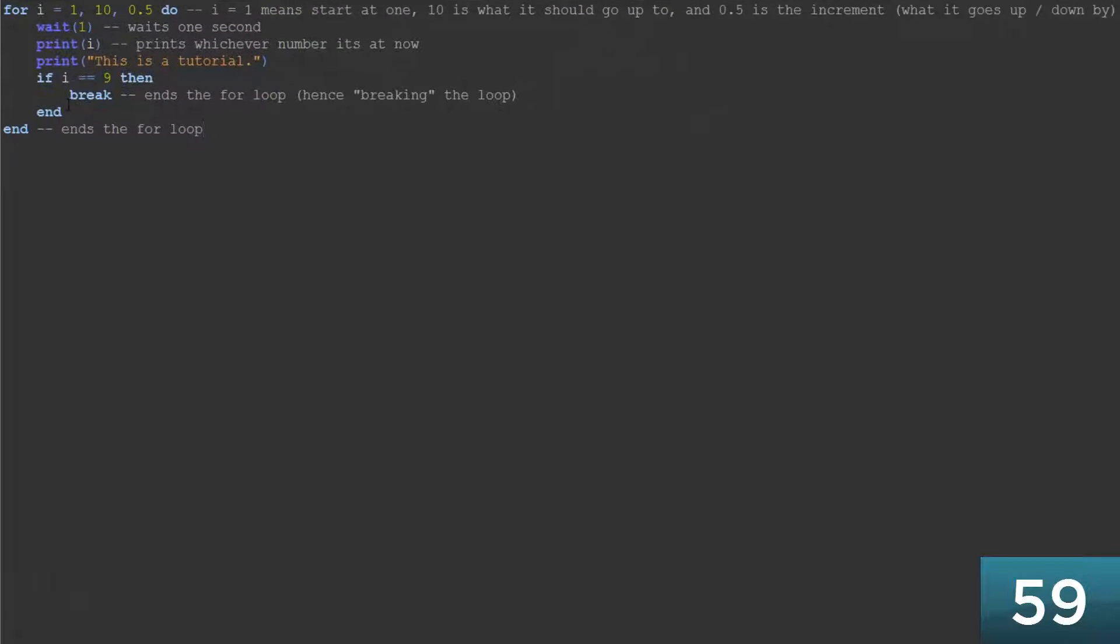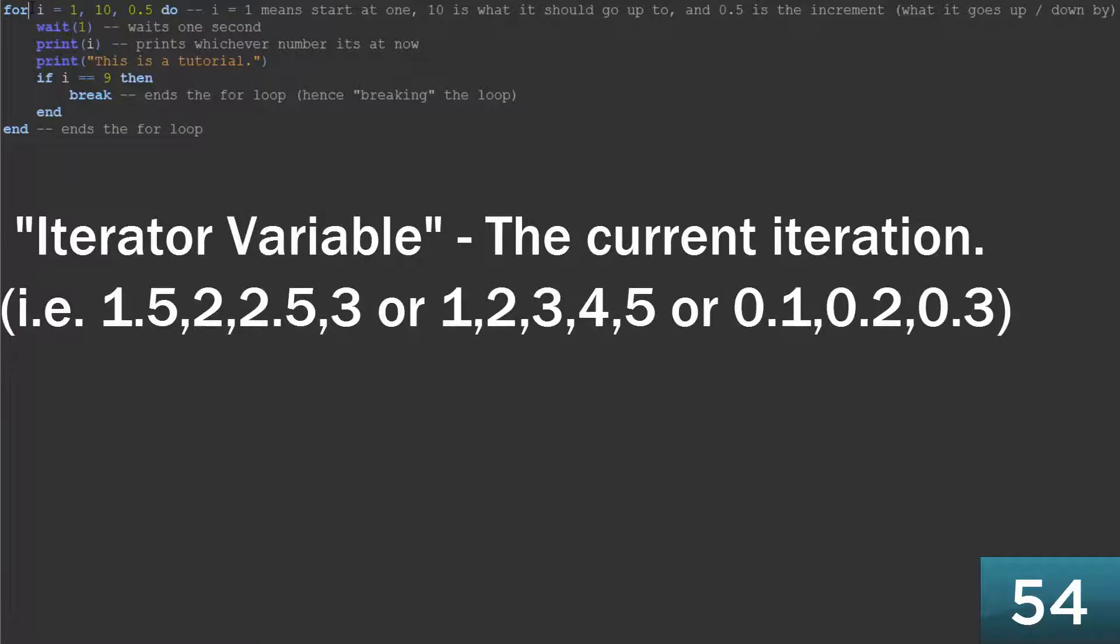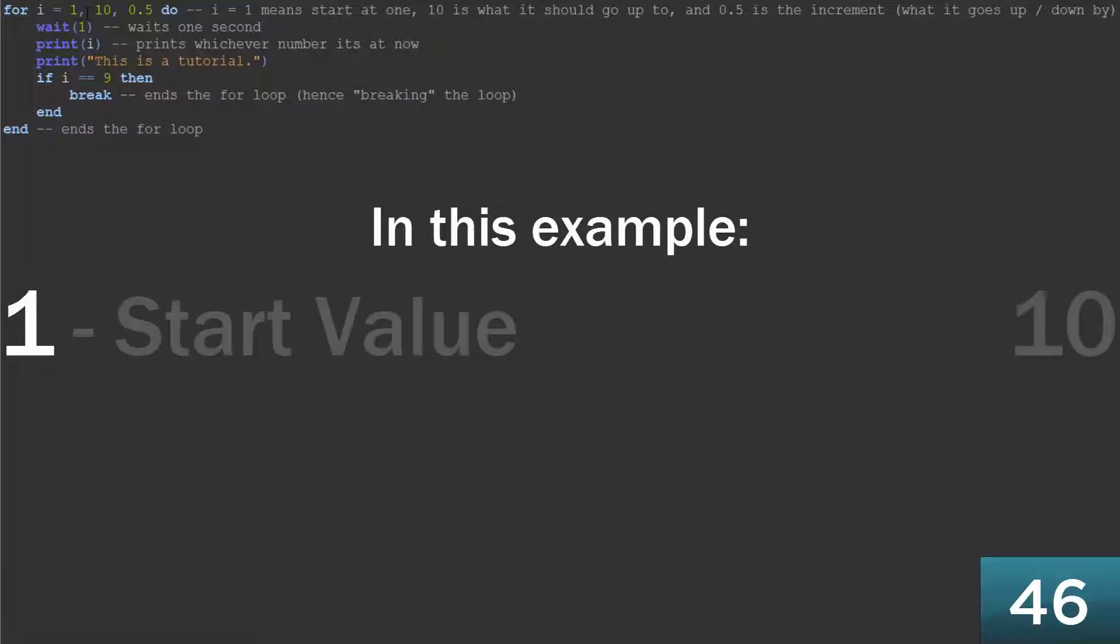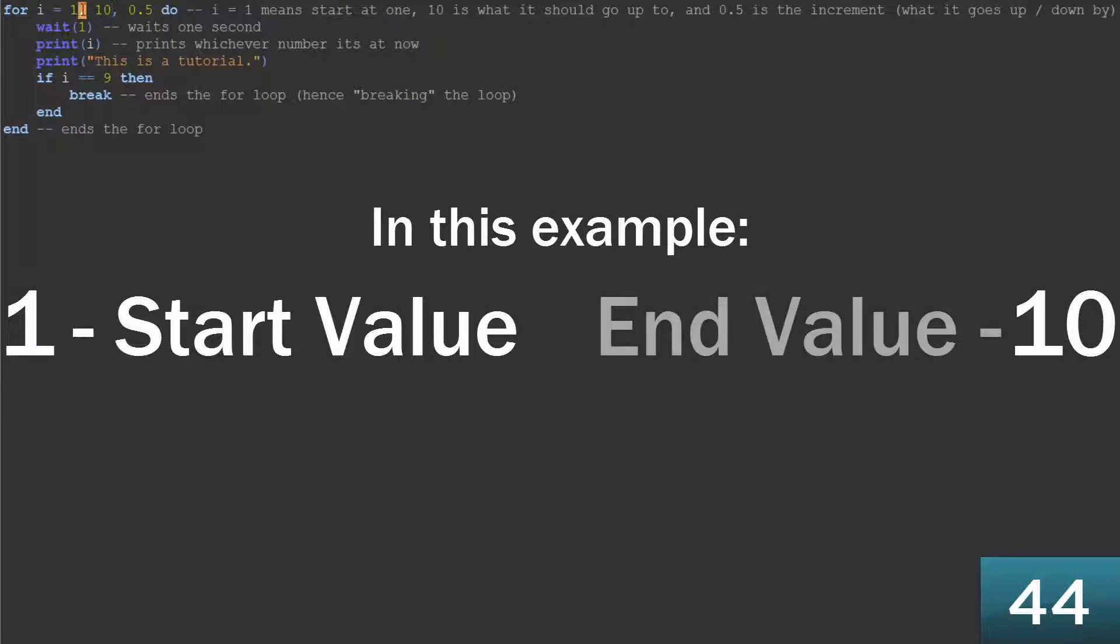The for loop is a loop that will loop a preset number of times. Up here we've got our iterator variable, and the iterator variable represents whichever number we're at at the moment. If you don't understand what that means, you will in a second. So here we've got 1, which is the start value, and here we've got 10 which is the end value. You've got a comma between them, and what that means is it will go between 1 and 10.